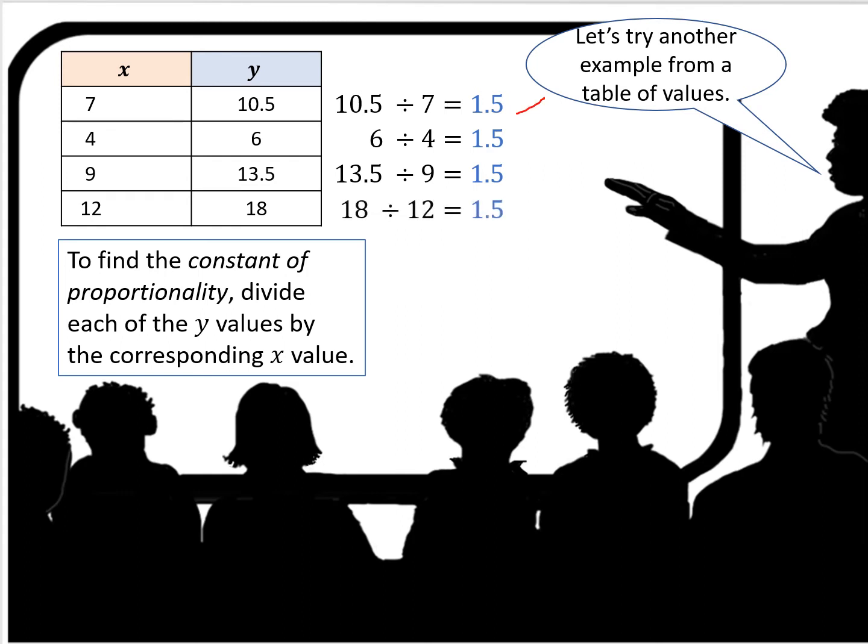And what you notice that's constant between all of them is 1.5. So the multiplier 1.5 is the constant of proportionality for the values in this table.